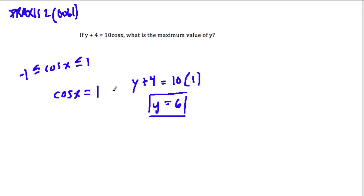We can test if we're feeling unconfident about the way it's set up, and I'm going to do that here because I do want to test the other extreme. What about when the cosine of x equals negative 1? Then y plus 4 would equal negative 10, and then y would equal negative 14. And that's smaller than 6.